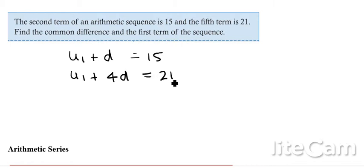Hopefully from there you can see that the method is just going to be simultaneous equations. If I do the second equation take away the first equation, I'll end up with 3d equals 6, therefore d equals 2. Now that d equals 2, I can put that straight back into the first equation: u1 plus 2 equals 15, so u1 equals 13. Pretty straightforward stuff.